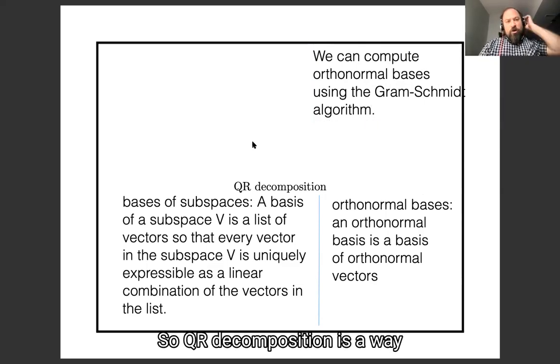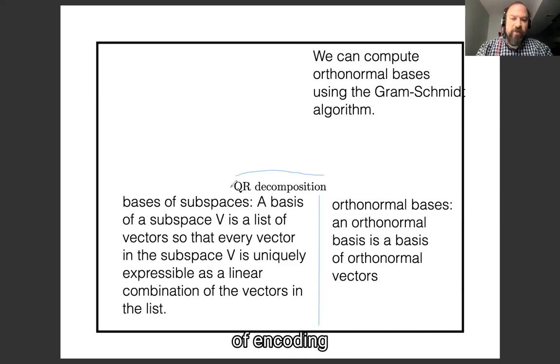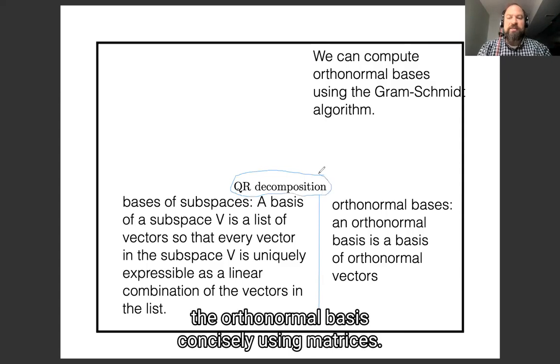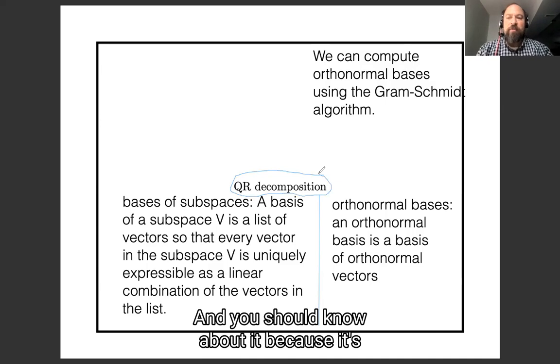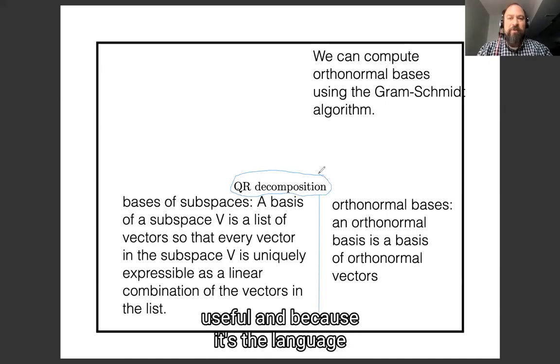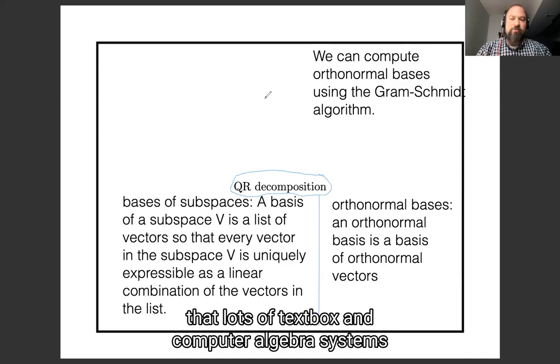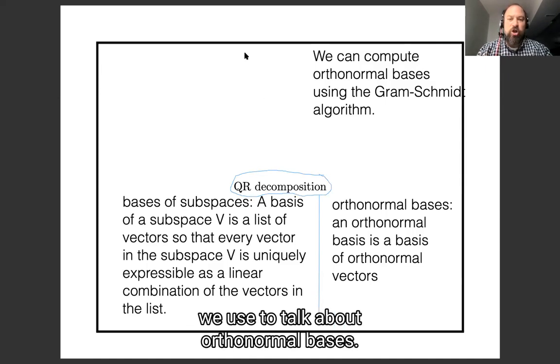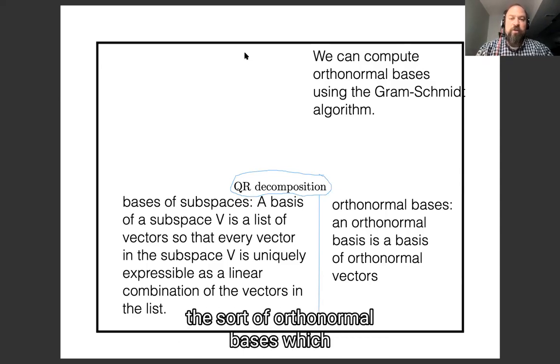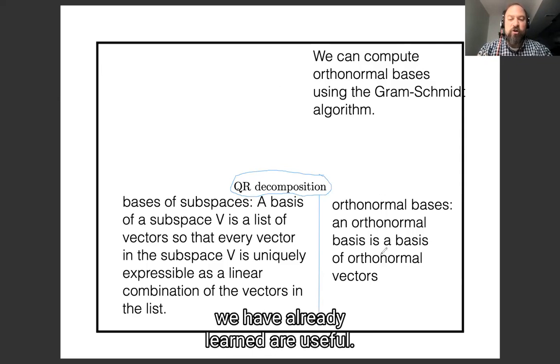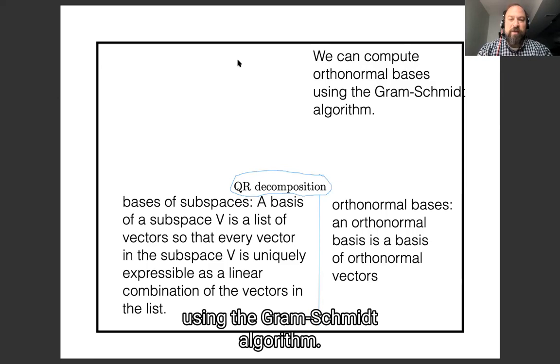So QR decomposition is a way of encoding the orthonormal basis concisely using matrices, and you should know about it because it's useful and because it's the language that lots of textbooks and computer algebra systems will use to talk about orthonormal bases. So let's learn this language. It's just a language for talking about the sort of orthonormal bases which we have already learned are useful and have learned to compute using the Gram-Schmidt algorithm.